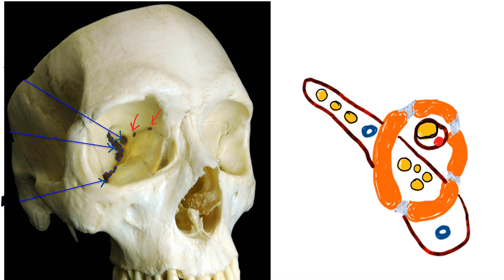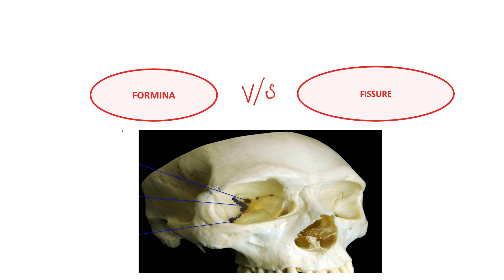Hello and welcome to Insight Ophthalmology. This is Dr. Amrit welcoming you to the continuation of Anatomy of Orbit. Today we are studying the various foramina and fissures which are present in the orbit and the contents which are passing through them.